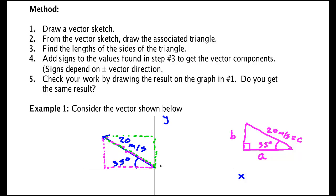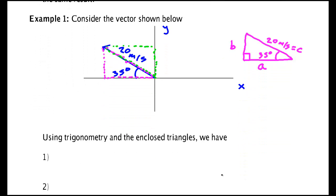So from this vector, I have found an associated triangle. And my first step in breaking the vector components now is to find the lengths A and B using trigonometry. So let's go ahead and do that using trigonometry. A is equal to C, the hypotenuse, times the cosine of my angle. We'll call that angle theta, which would be 20 meters per second times the cosine of 35 degrees. And if I punch that in the calculator, come up with it, that's 16.4 meters per second.